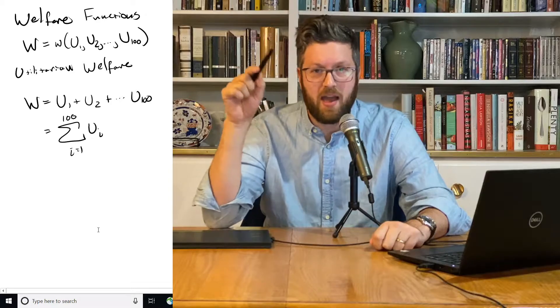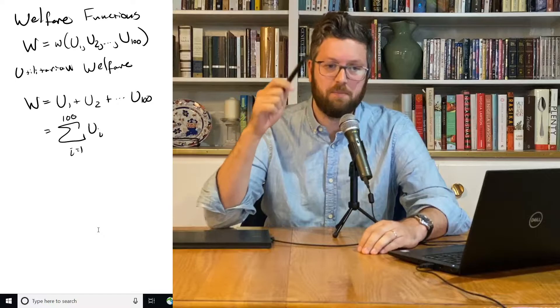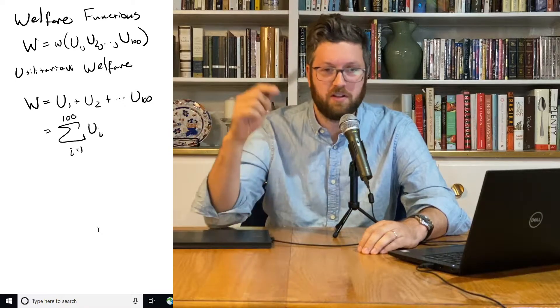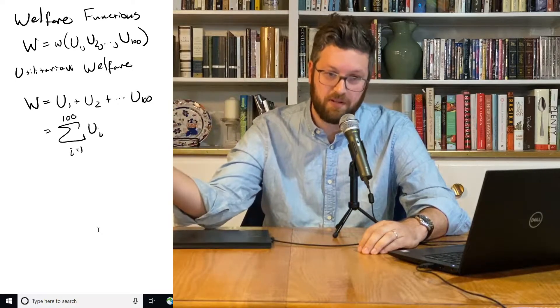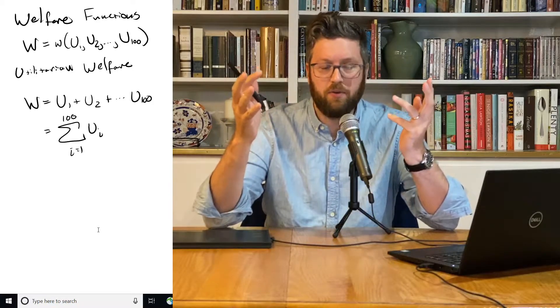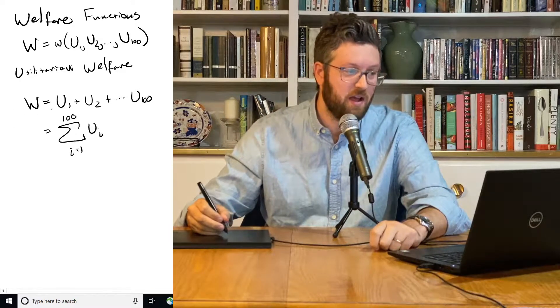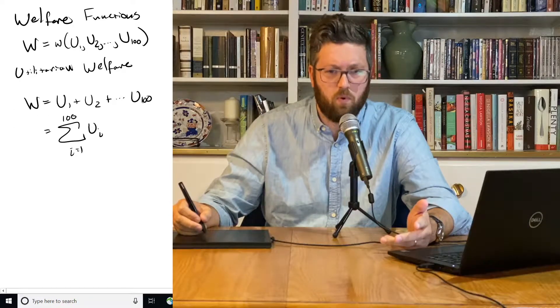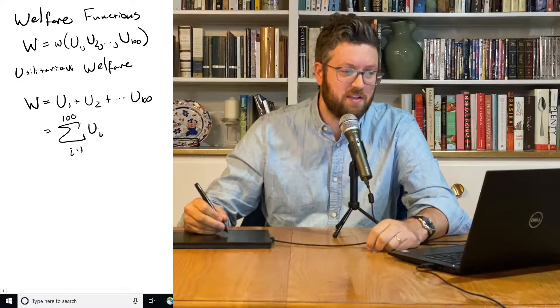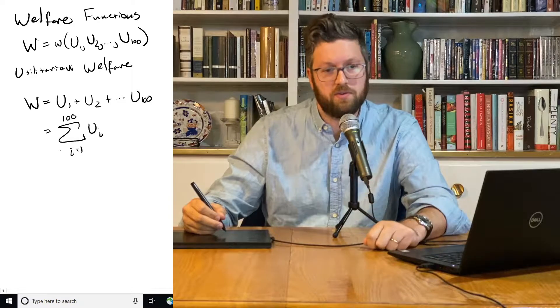So instead of UA for Alice and UB for Bob, there's 100 colonists. I'm giving them all a number from 1 to 100. So we've got the utility of person 1, 2, 3, etc. The utilitarian approach, we just add all those utilities up, and I've written it two ways, just adding up the sequence from 1 to 100. And then this is the notation for a summation, which we're going to use in this course.